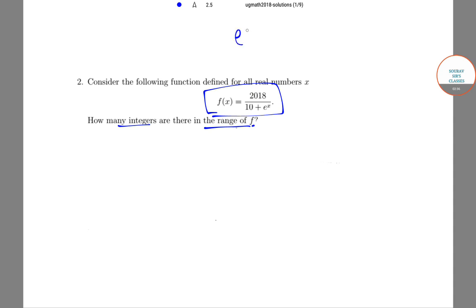Since e^x is an increasing function, f(x) would be a decreasing function since e^x is in the denominator. As x goes far left, the denominator approaches 10 and the function value approaches 201.8. On the other hand, as x goes far right, the denominator blows up and the function value approaches zero.